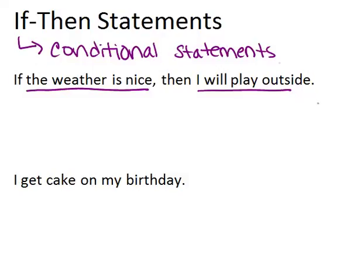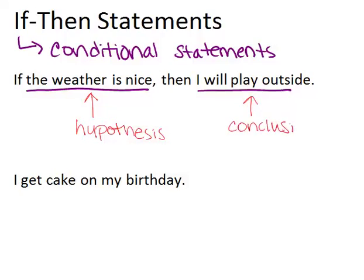If this whole sentence is true, then I can be sure that if the weather is nice, I will be outside playing. So that's an example of a conditional statement. There are two other pieces of vocabulary that you need to know. The first part of the conditional statement is called the hypothesis — that's always the part attached to the 'if.' And then the part attached to the 'then' is called the conclusion. You should know those words in order to identify different parts of conditional statements.